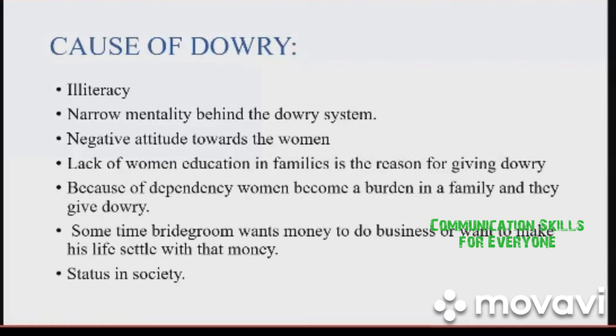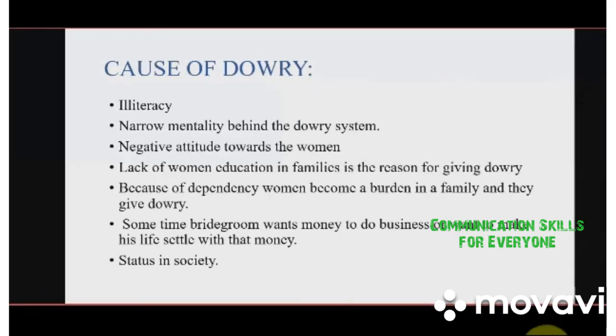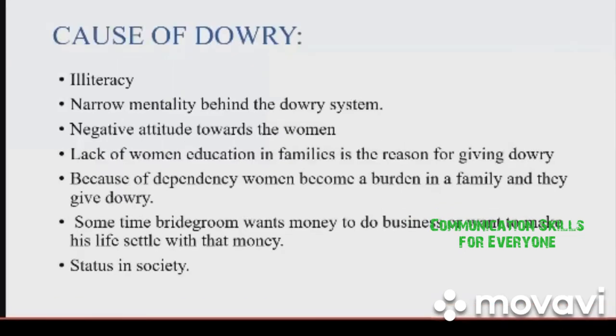Consequences of dowry — Status in society and domestic violence: Domestic violence such as physical torture and mental torture of the bride. Abetment to suicide: Some brides tend to attempt suicide due to the torture by the bridegroom's family.